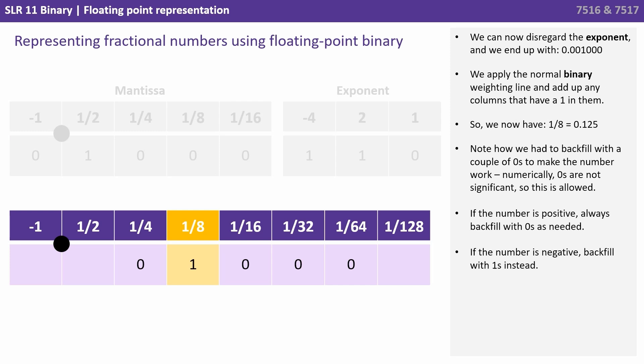Again we apply the normal binary weighting line and add up any columns that have a 1 in them. So we have an eighth or 0.125. Note how we had to backfill with a couple of zeros to make the number work. Numerically zeros are not significant so this is allowed. If the number is positive we always backfill with zeros as needed. If the number is negative we backfill with ones instead.